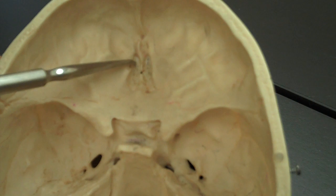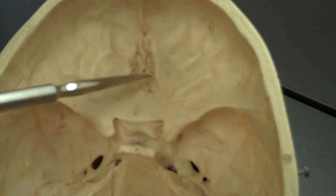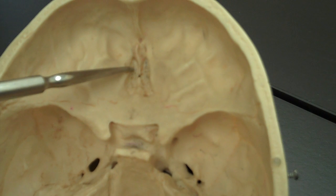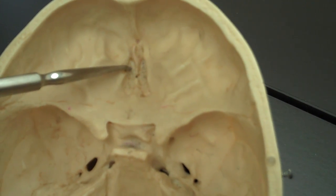And then these valleys that you see right here, might be difficult to tell, but it has sort of a sponge-like appearance to it. Those valleys are called the cribriform plate. Again, cribriform plate - it has that R in there, don't forget.